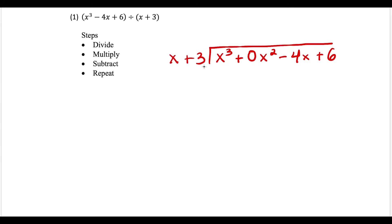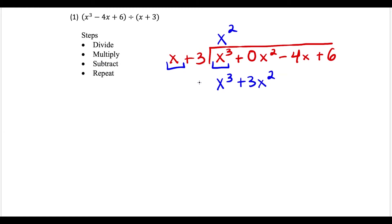When you divide by x plus 3, you want to divide the leading terms first. That's the first step: divide. x to the third over x is going to make x squared. Next, you multiply — x squared times x is x to the third, and 3 times x squared is 3x squared.